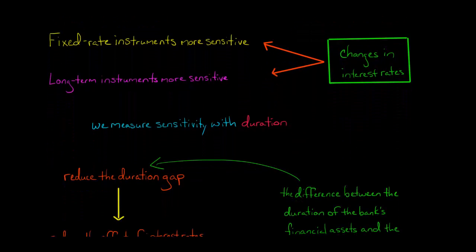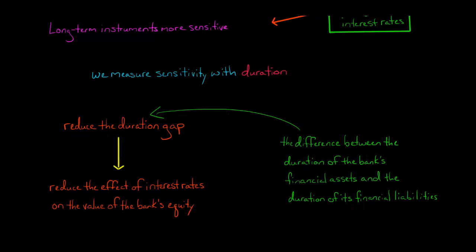Okay, so the bank would go ahead and calculate its duration and it could calculate the duration for its financial assets and its financial liabilities. Now the bank is going to want to reduce the duration gap, which is the difference between the duration of the financial assets and the duration of the financial liabilities.